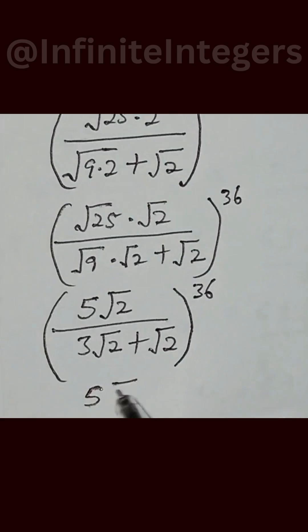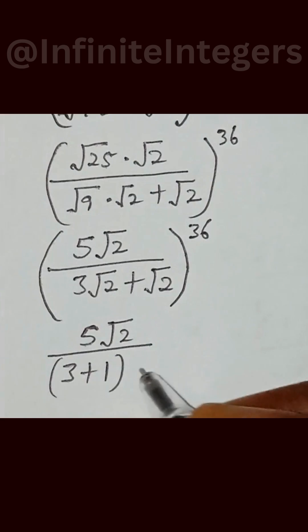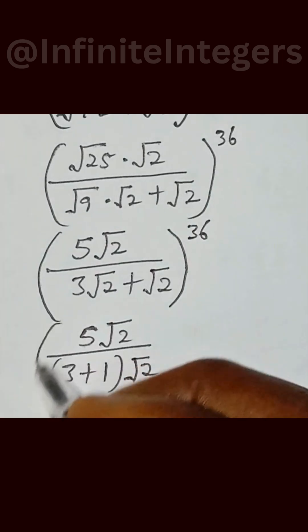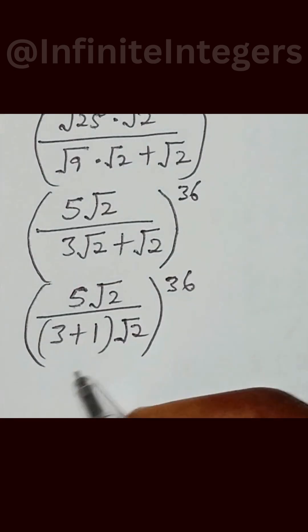And this can be written as 5 square root of 2 over 3 plus 1 into bracket to the power of 36.